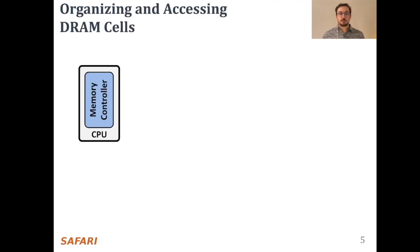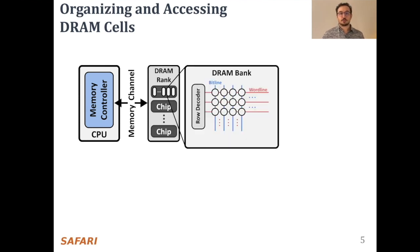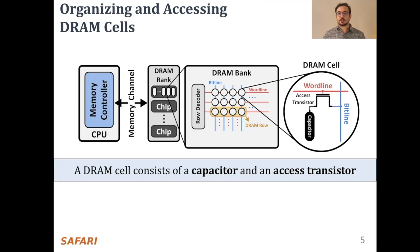A processor's memory controller communicates with a set of DRAM chips called a DRAM rank through a memory channel. Each DRAM chip contains multiple banks. DRAM cells are organized as an array within each bank. Here's a simplified diagram of a DRAM cell where the data is stored as capacitor voltage and accessed through the access transistor.